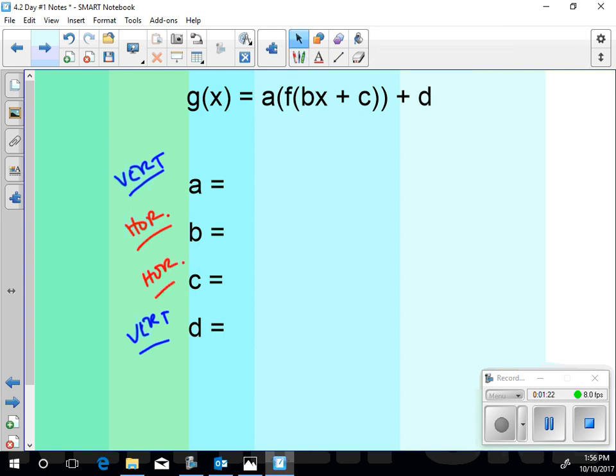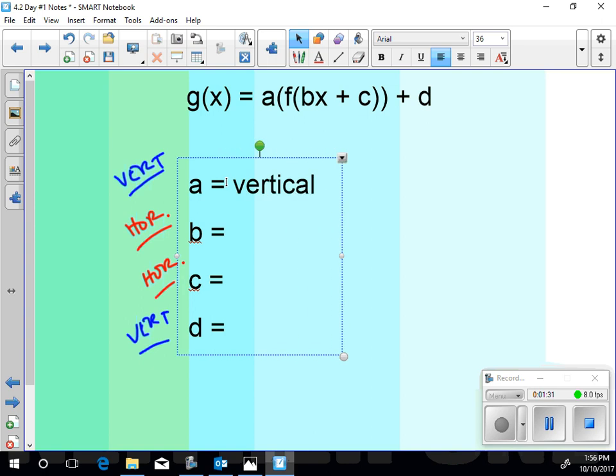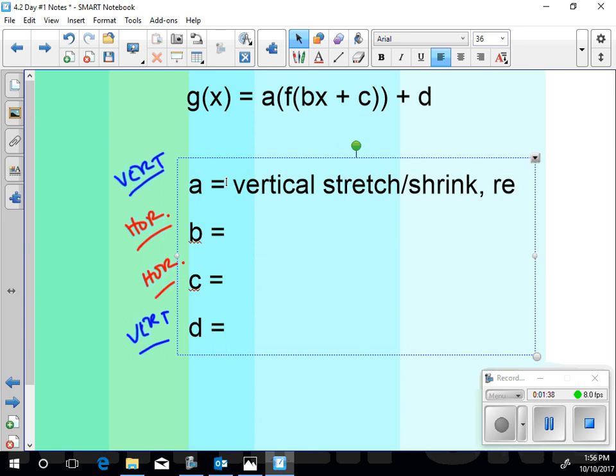So, let's chat about what a does to this function. What would a do to this function, f of x? It would be a vertical stretch or shrink, possibly a reflection if it's negative. Oh, we remember things. What about d? That's a vertical shift, yeah. Up or down, depending on if it's positive or negative.